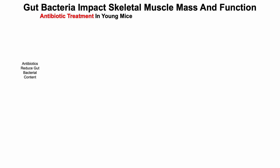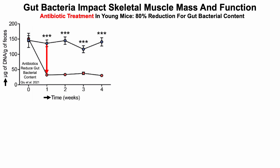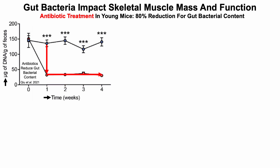Antibiotics reduce gut bacterial content, as we can see here, where on the y-axis we've got micrograms of bacterial DNA per gram of feces plotted against time. This was a four-week study of antibiotic treatment in young mice. After one week of antibiotics, gut bacterial DNA content is reduced by 80%, and it stays 80% reduced for the duration of the four-week study.